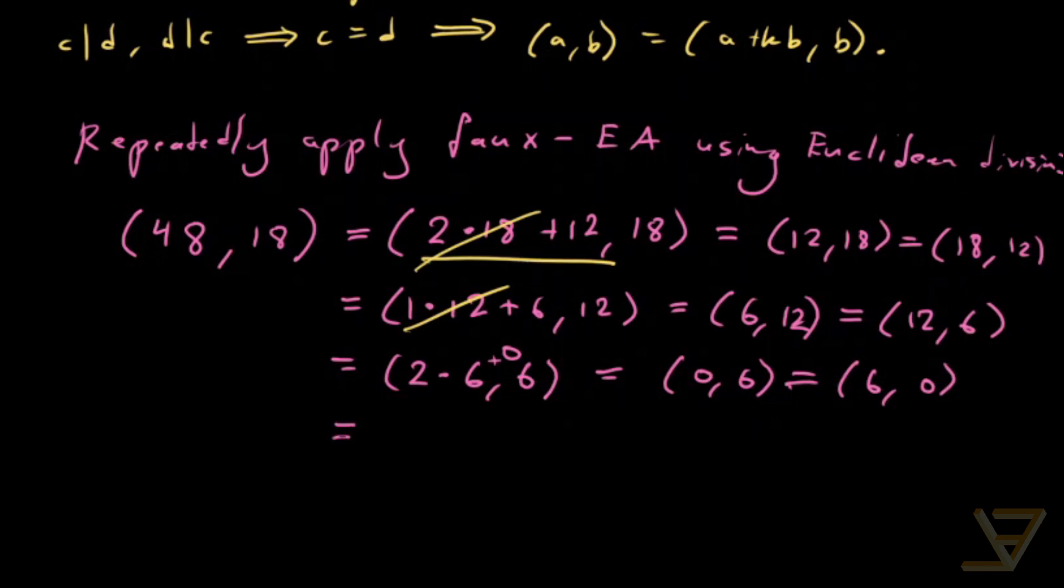So we find that this is 0, comma 6, which is equal to 6, comma 0. And the answer, the GCD of 6 and 0—well, the GCD of n and 0 for any positive or non-zero integer n is just n. So the answer is 6.